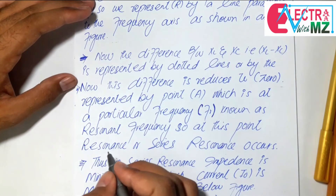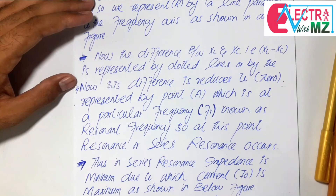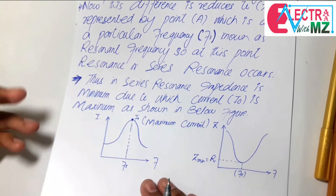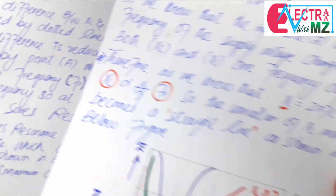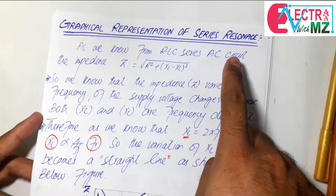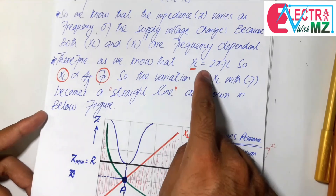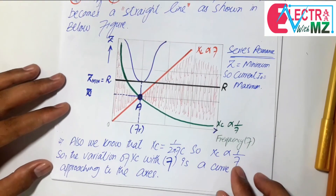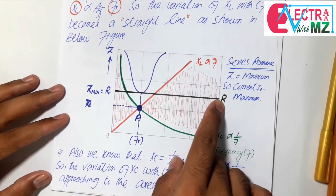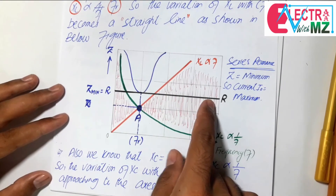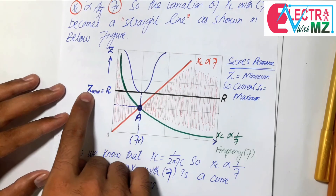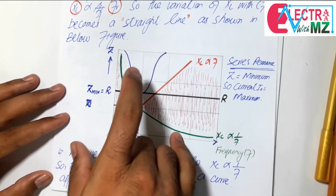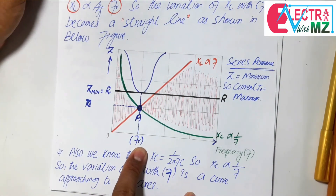This completes the graphical representation of RLC series AC circuit resonance, or series resonance. To summarize: XL equals 2πfL and is directly proportional to frequency; XC is inversely proportional to frequency; resistance R is independent of frequency and is drawn as a straight line. At the resonant frequency, resistance equals impedance at its minimum point, and therefore current at that point is maximum.